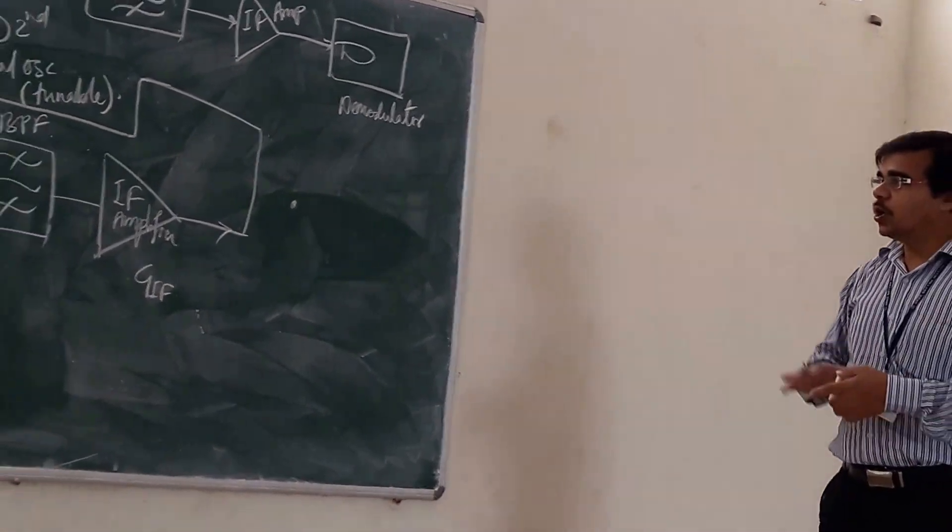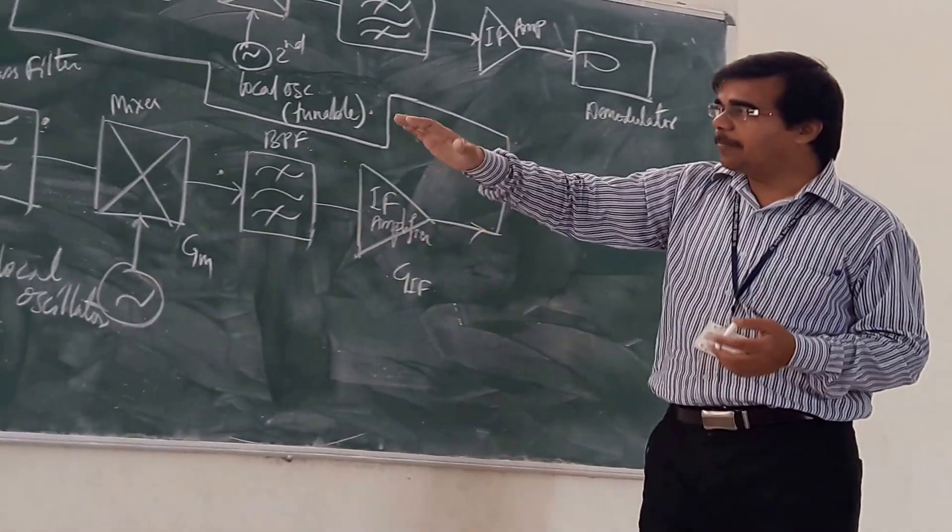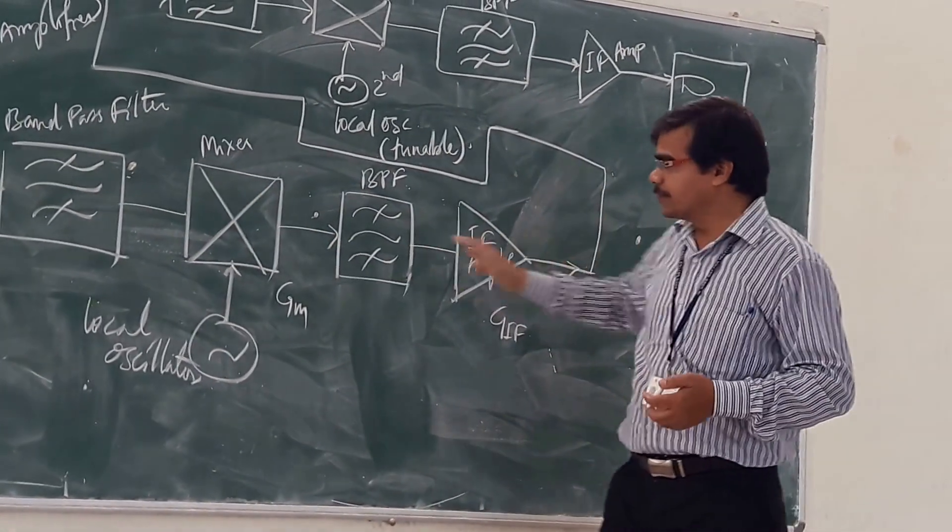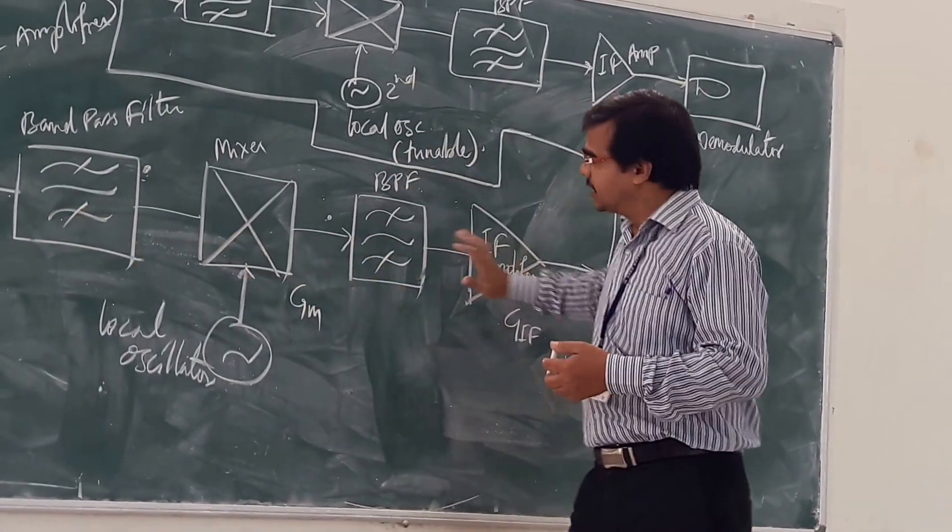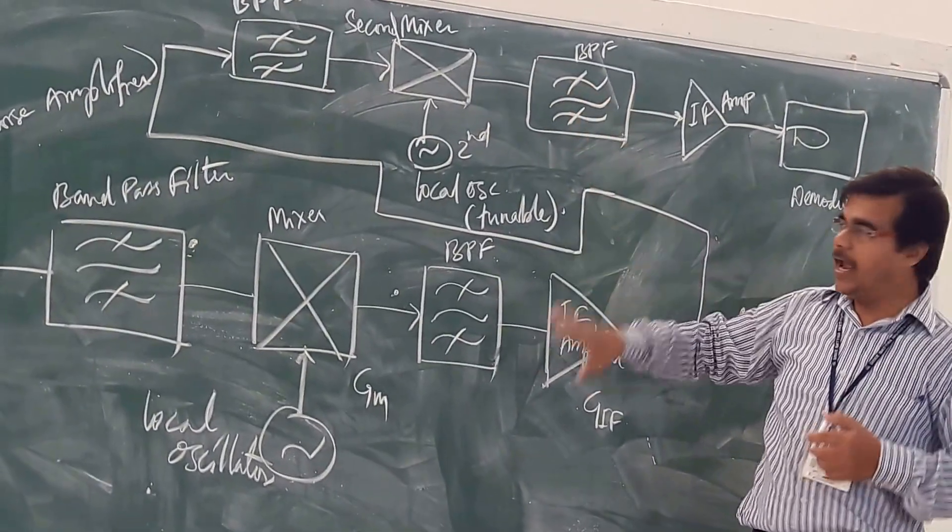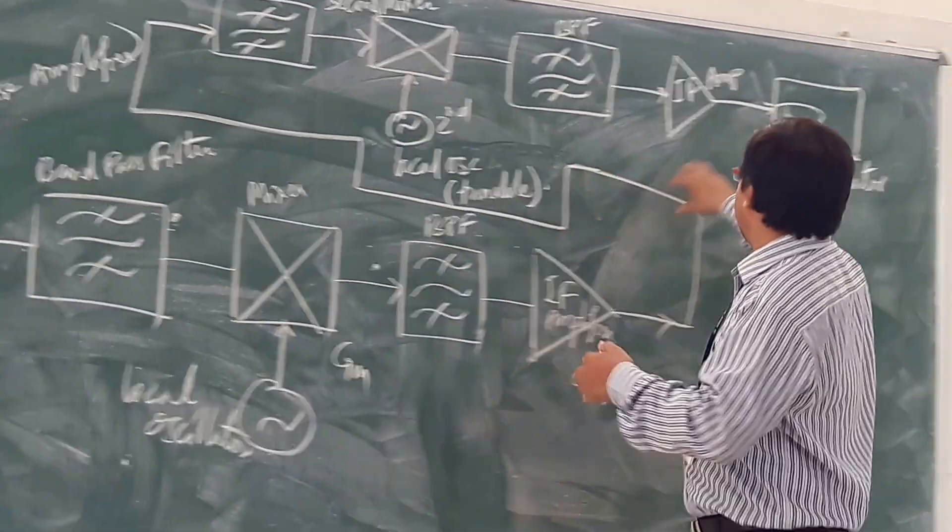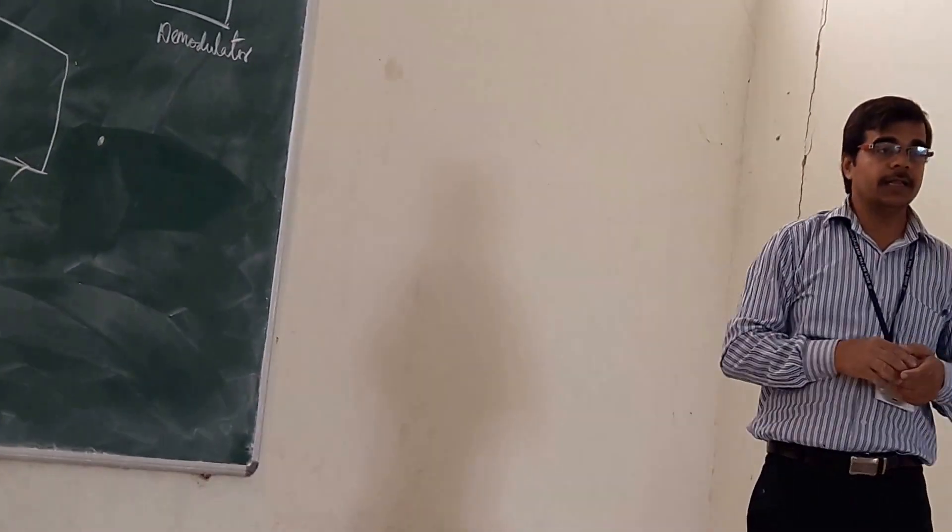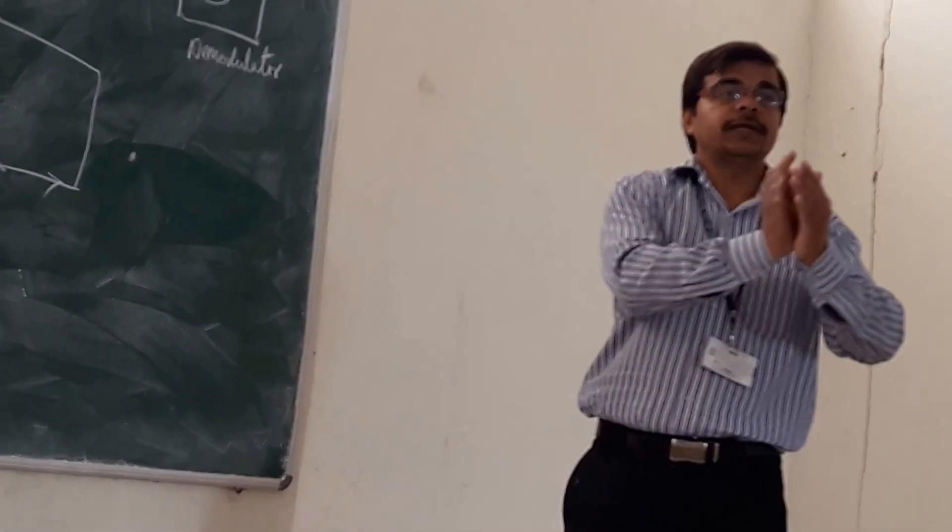So if you are seeing your double conversion, here whatever the block you are having here, the same block is repeated. As same block is repeated, whatever the demodulated output that you will get, you will get the pure demodulated output.